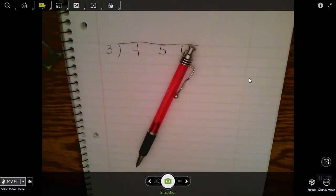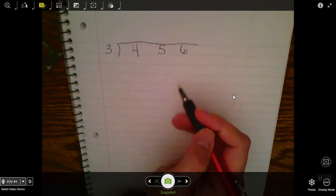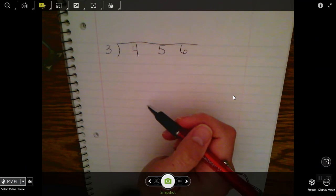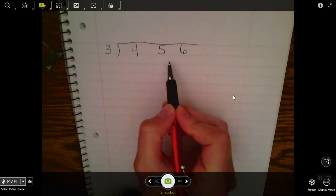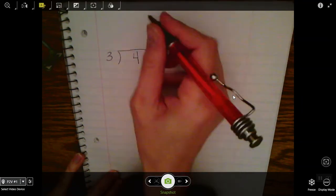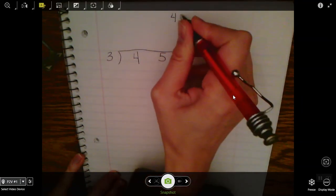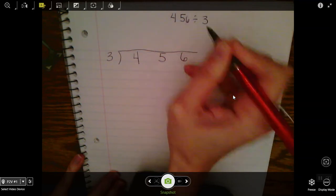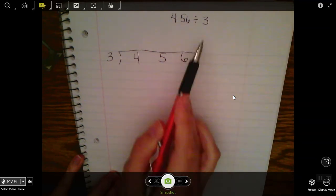Hi guys, we're going to go over how we can do long division. This is going to help you when you get to your decimal unit because you'll have a decimal after this whole number. If I were to write this problem another way, you would see it written out like this: 456 divided by 3.